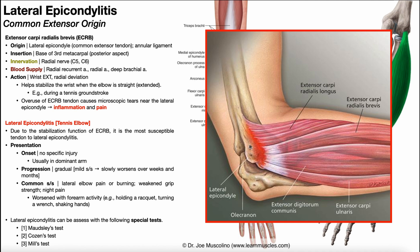Down here you see the lateral epicondyle, which is the widening distally of the lateral supracondylar ridge. All these white tissues right here are the tendons of the various muscles that attach onto the lateral epicondyle, and collectively these tendons fuse into the common extensor tendon. Here you see extensor carpi radialis brevis, here's extensor digitorum communis, here's extensor carpi ulnaris, and there are a couple of others. But only extensor carpi radialis brevis has a significant stabilization function, so it's going to be the most susceptible to inflammation at the common extensor tendon.